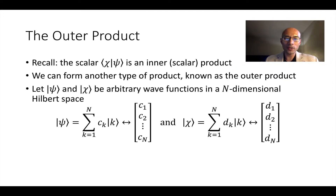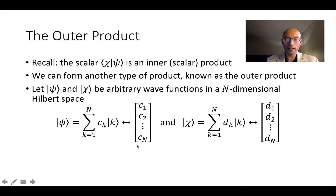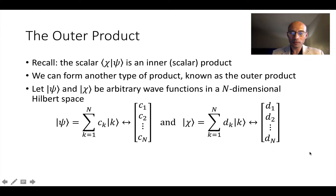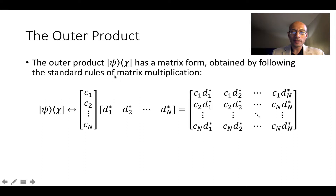So let's now introduce the concept of an outer product. We talked about inner products last time. Now, if we have an arbitrary psi and chi, we're going to expand psi and chi both in this same basis k — they have coefficients of expansion c for psi and d for chi. The outer product puts the ket of psi and the bra of chi together, like this.